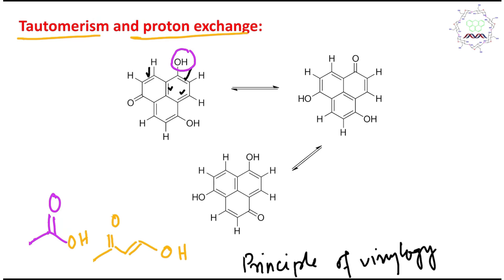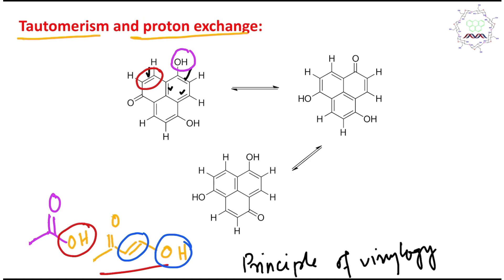The principle of vinylogy states that if there is a double bond or conjugation between two functional groups, properties are carried forward through that conjugation. For example, the OH in a carboxylic acid is significantly acidic. In the second case, there is a double bond followed by an OH, and similar acidic properties are observed. Because of this principle of vinylogy, the proton shifts via tautomerism from the OH to the carbonyl position.